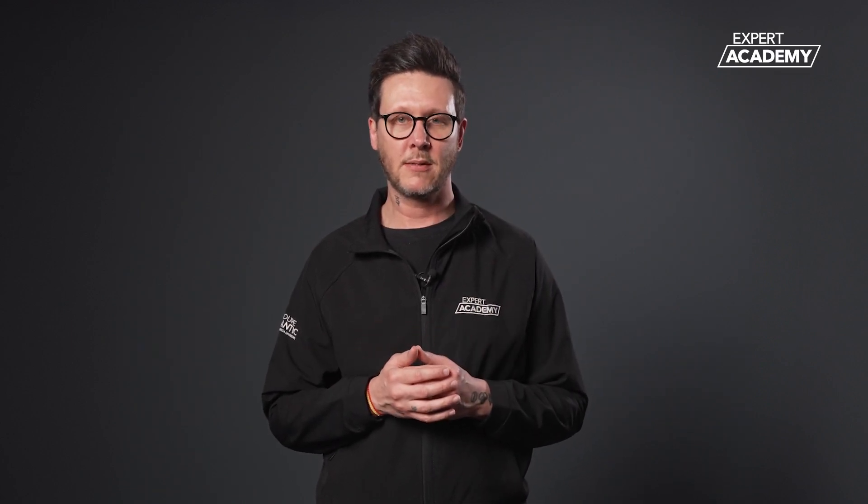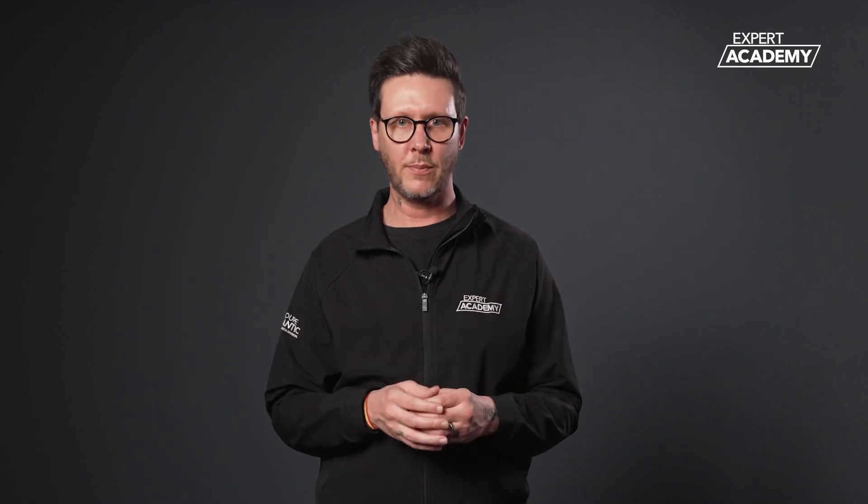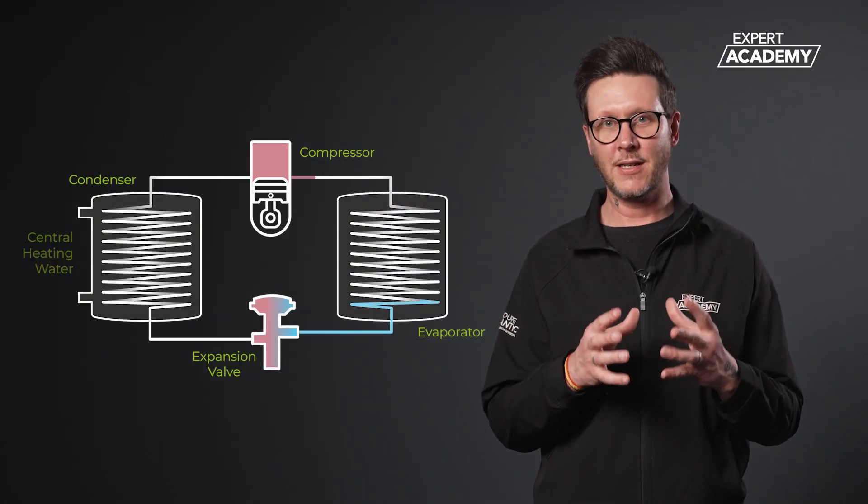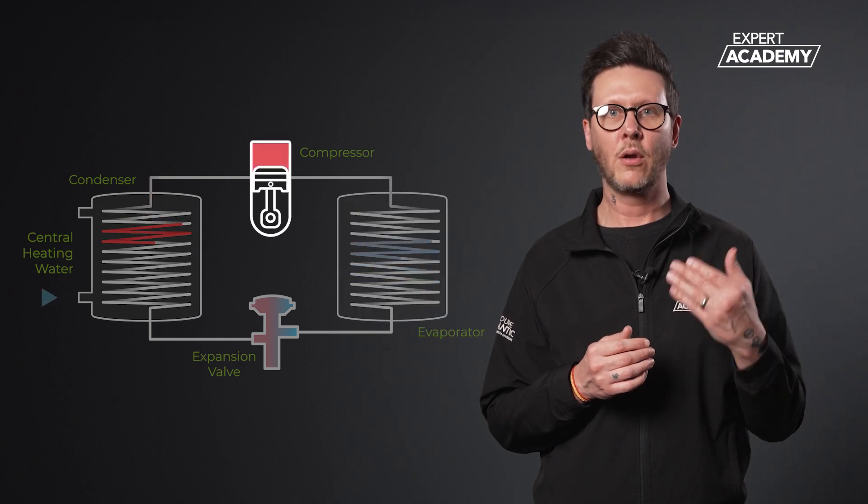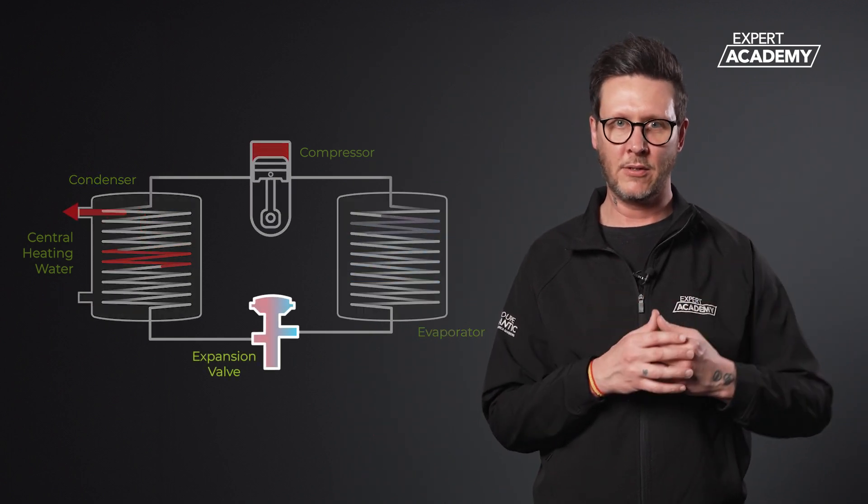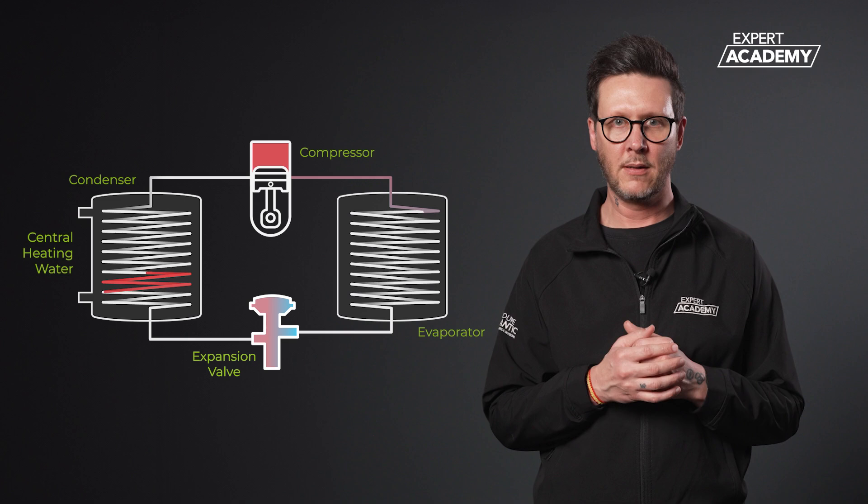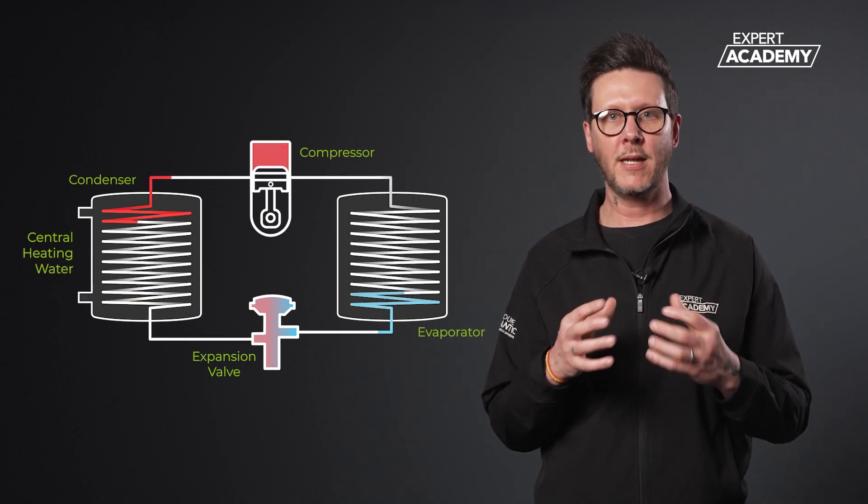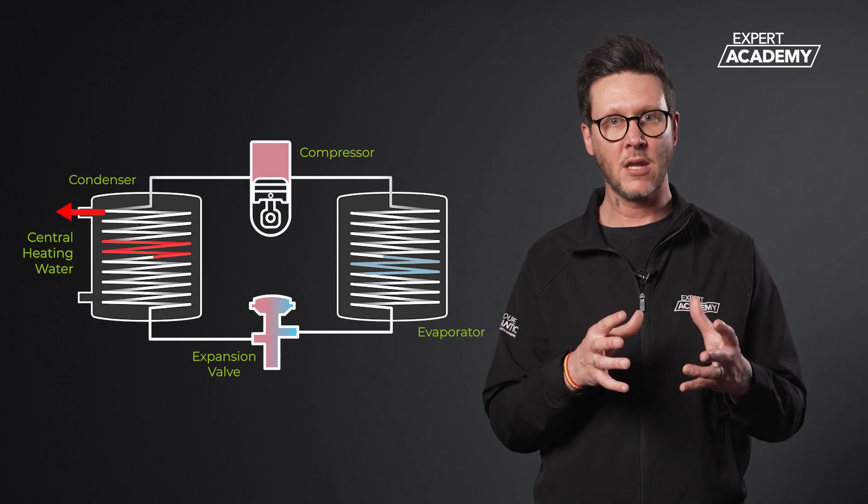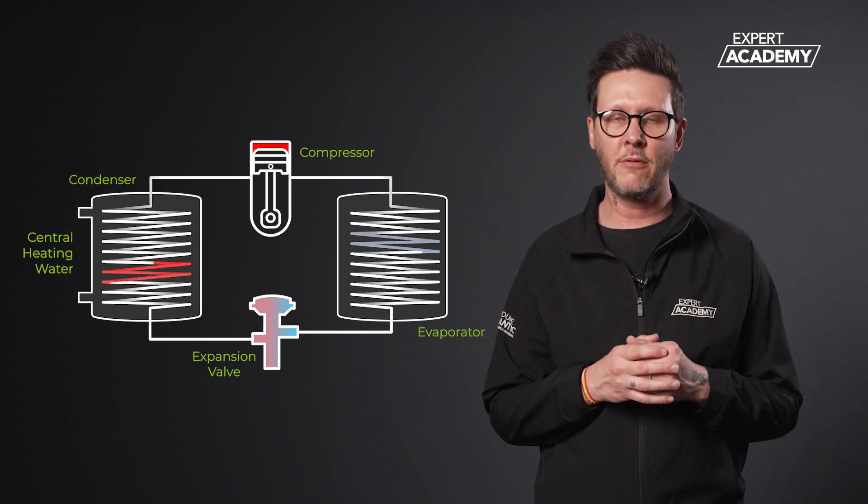Although when first viewing there seems a lot of information involved in how a heat pump works, re-watching this video will help embed the process. The vapor compression cycle is a continuous loop. The refrigerant circulates through four main components—the evaporator, compressor, condenser, and the expansion valve—in a continuous manner, transferring heat from one location to another through manipulation of pressure. The cycle repeats for as long as the heat pump is in operation.